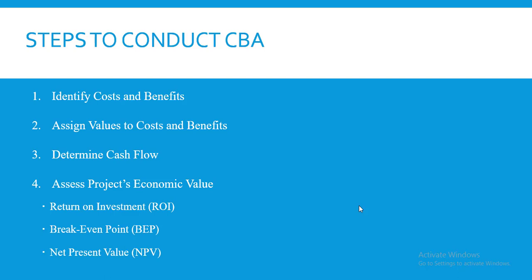Benefits are also divided into two types. Tangible benefits are those to which we can attach a monetary value — for example, an increase in sales. Intangible benefits are those we cannot directly attach a monetary value to — for example, improved customer satisfaction, which we may not easily quantify in monetary terms.